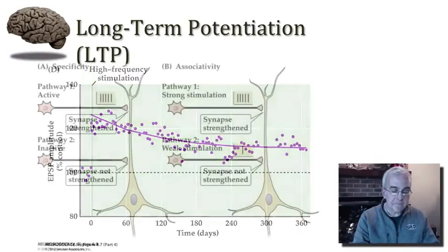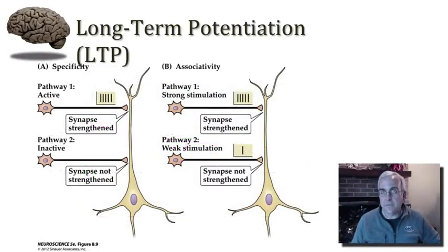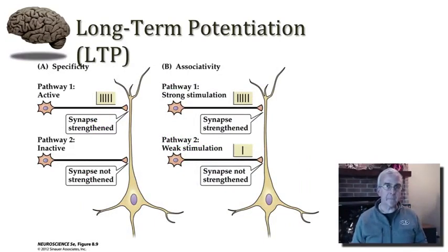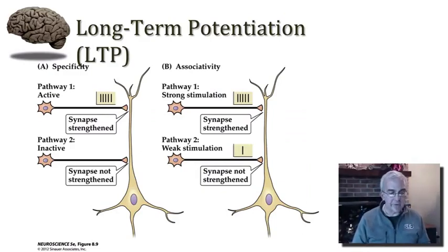Now let's consider a couple of properties of long-term potentiation that help us understand some of the principles at play here. One principle is called specificity, and the other is associativity.